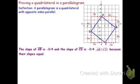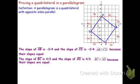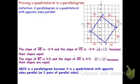Turning to the other pair of parallel sides, the slope of BC is 4 thirds and the slope of AD is 4 thirds, so those segments are parallel because their slopes are equal. We've just shown that we have two pairs of parallel sides, or that the opposite sides are parallel. Therefore, I can conclude that ABCD is a parallelogram, because it is a quadrilateral with opposite sides parallel, or equivalently, a quadrilateral with two pairs of parallel sides.